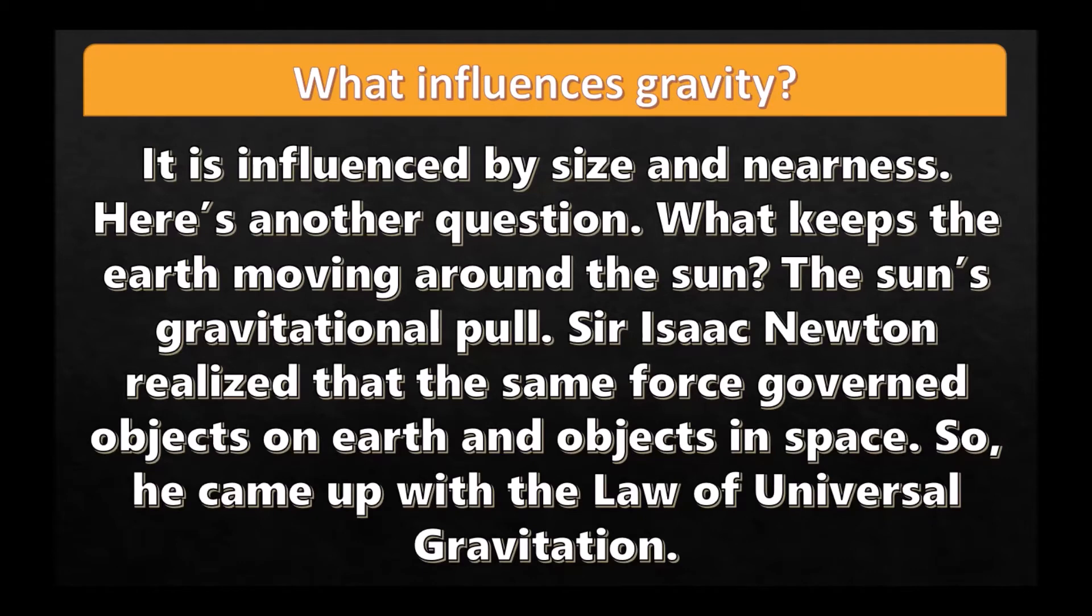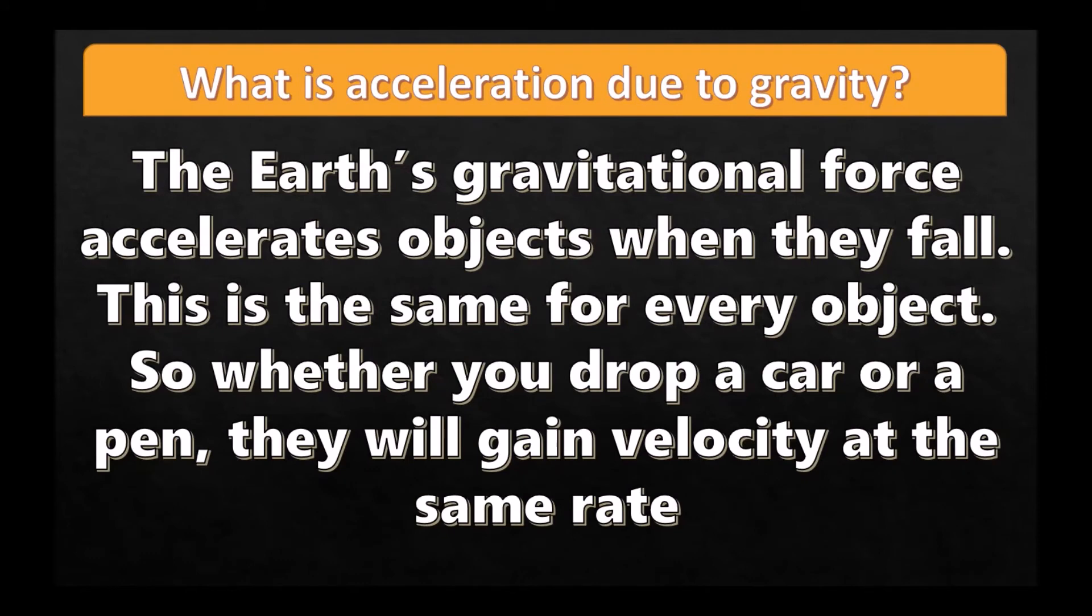The Sun's gravitational pull. Sir Isaac Newton realized that the same force governed objects on Earth and objects in space. So he came up with the law of universal gravitation. What is acceleration due to gravity? The Earth's gravitational force accelerates objects when they fall.